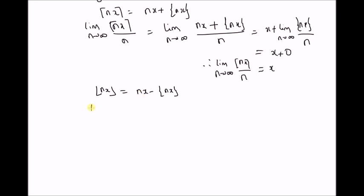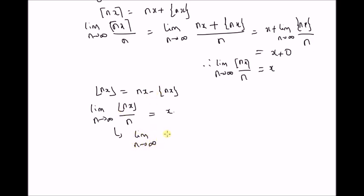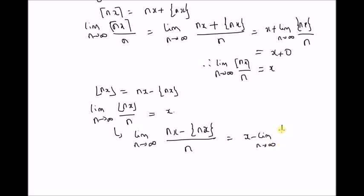When this fraction is 0, then the floor of the real number is the number itself, which means that this real number is an integer. The limit we want to prove is the limit as n tends to infinity of the floor of nx divided by n is equal to x. Starting with the left hand side, we have the limit as n tends to infinity, and using the definition, we have nx minus the fraction, all divided by n. This is equal to x minus the limit as n tends to infinity of the fractional value divided by n.